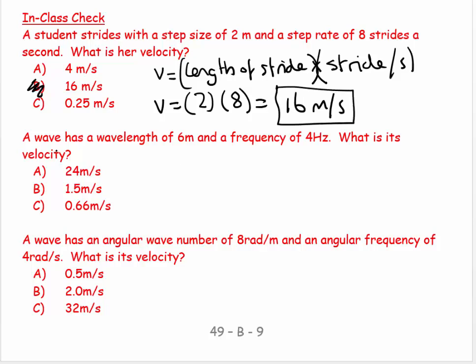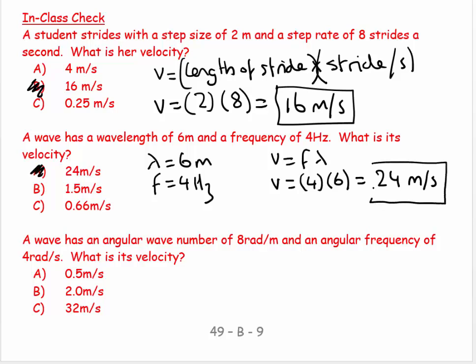And then for the next one, a wave has a wavelength lambda equal to six meters and a frequency equal to four hertz. What is the velocity? Well, if V equals F lambda, so V is equal to F, which is four, times lambda, which is six, which equals 24 meters per second.